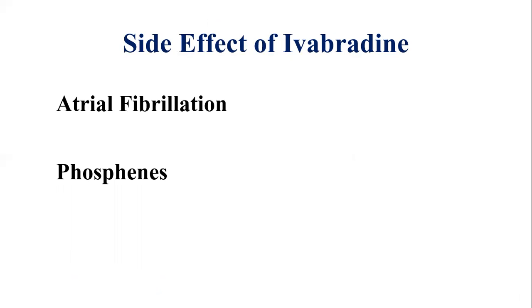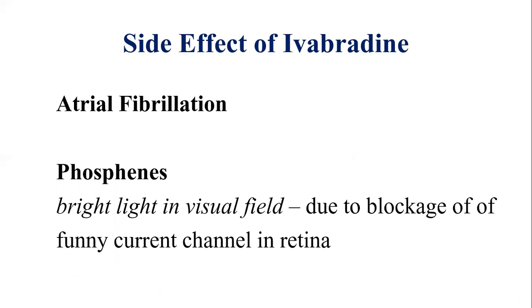There is another interesting side effect of ivabradine called phosphene. What is phosphene? It means seeing bright light in the visual field. This is because there are funny current channels in the retina as well — when ivabradine blocks these channels in the retina it can lead to phosphene, or bright light in the visual field.